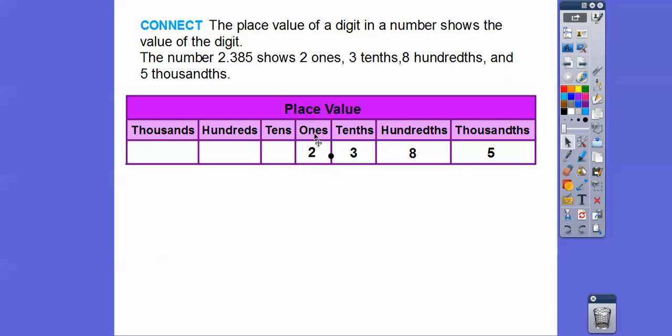The 2 stands for the ones. The 3 stands for the tenths, THS. This is the hundredths, and this is the thousandths spot right here.